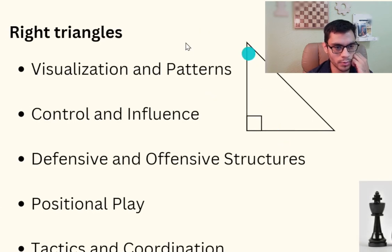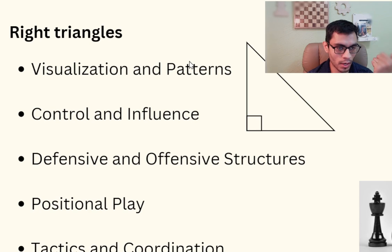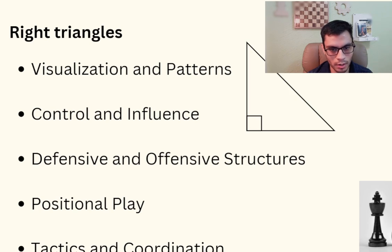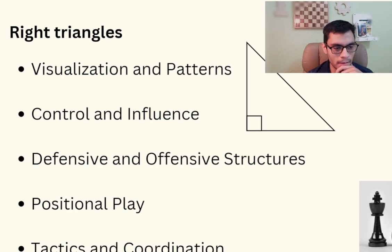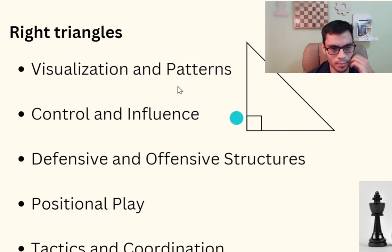We're going to spot these patterns — the right triangles. It's going to help you with visualizing patterns, and you'll have more control and influence over the board. You might also be able to spot defensive and offensive structures with these triangular formations, particularly with pawns and minor pieces. The concept of triangles can help you understand the balance of control, structure, tactics, and coordination. Today we'll see examples of this pattern — sometimes one way, sometimes the other — but you always see a right triangle. Let's take a look at some examples without further ado.